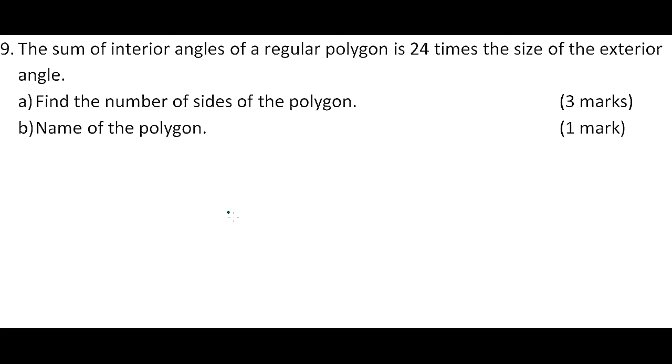Question number 9: The sum of interior angles of a regular polygon is 24 times the size of the exterior angle. Part a) Find the number of sides of the polygon. Part b) Name the polygon. We know that the sum of exterior angles...